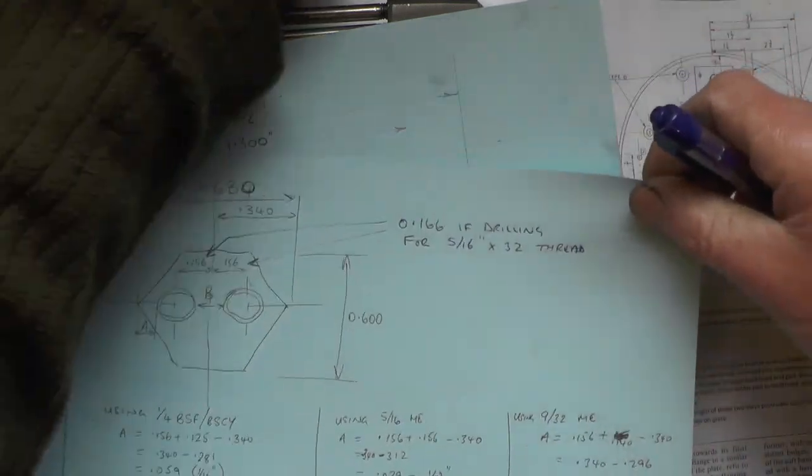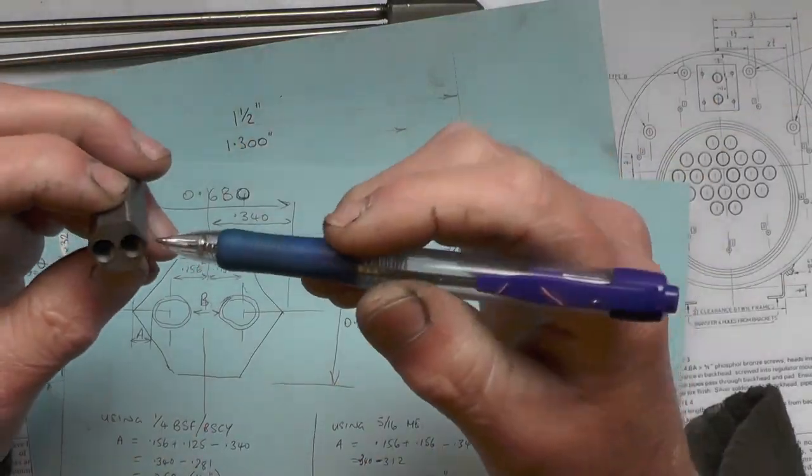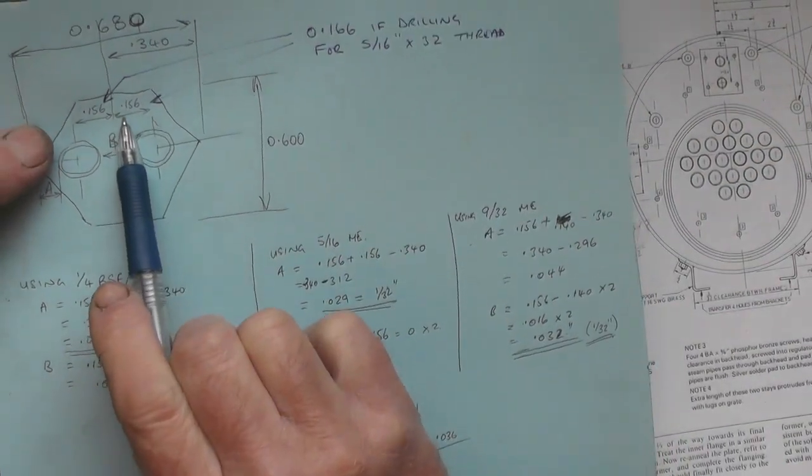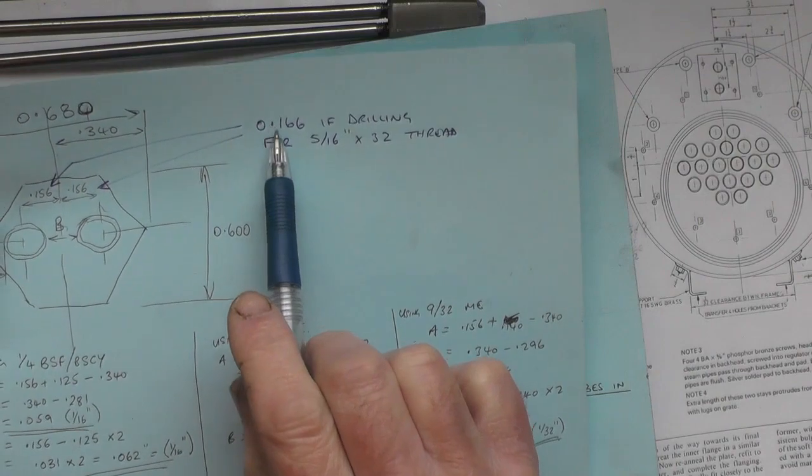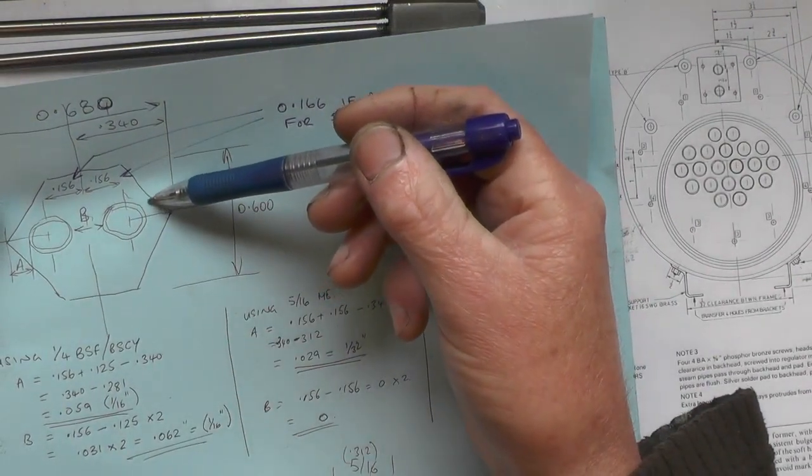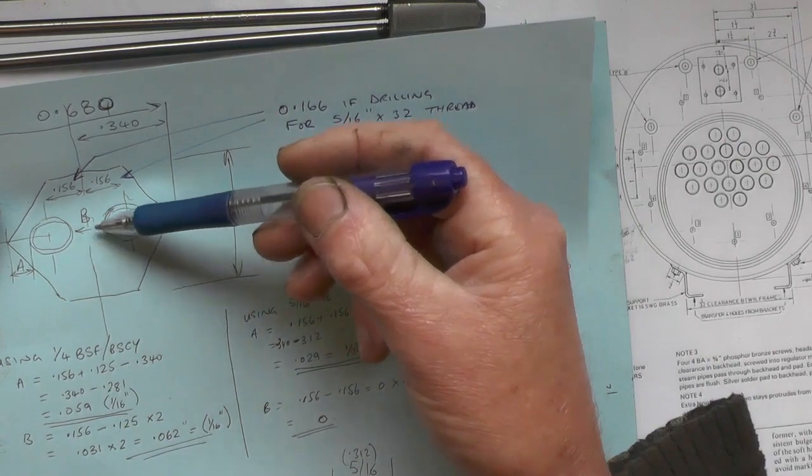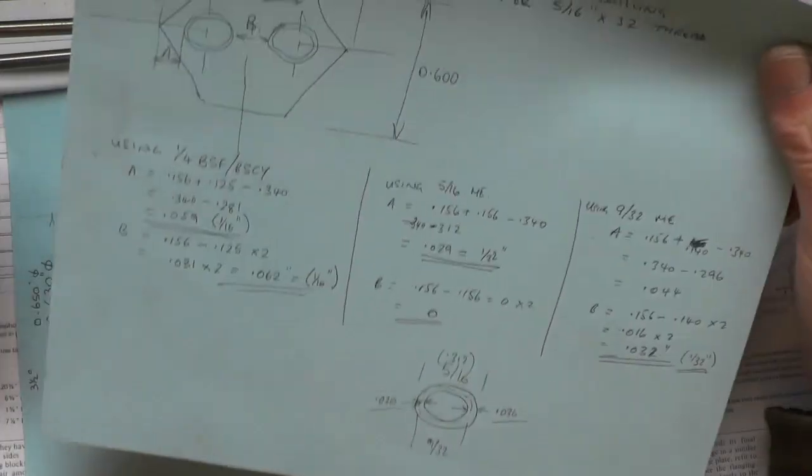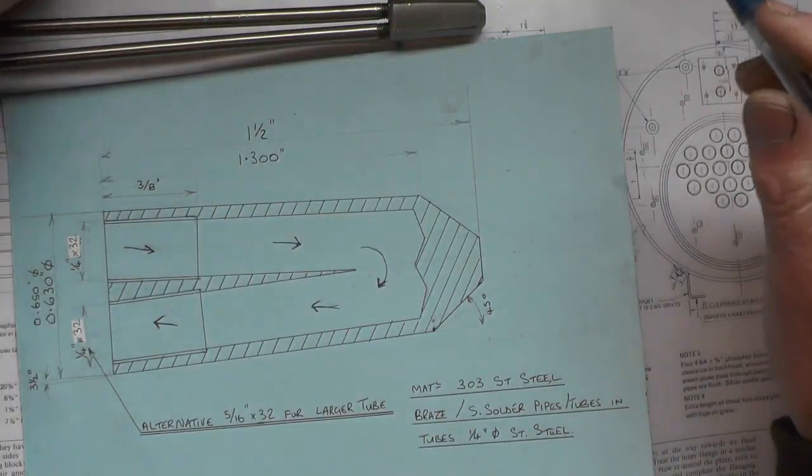When using the bigger tube, you've got less room to work with. You've got to move that dimension over to 0.166 each side. That way you're coming closer to this edge, but you're allowing yourself enough in the middle to put the bigger tubing in. I've tapped on 5/16 by 32, and my prototypes worked out okay.